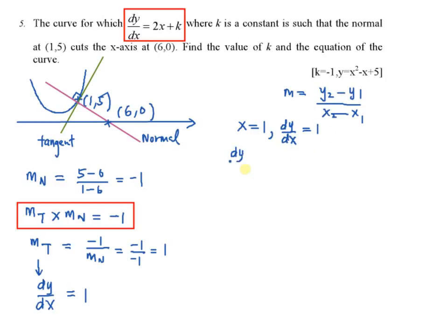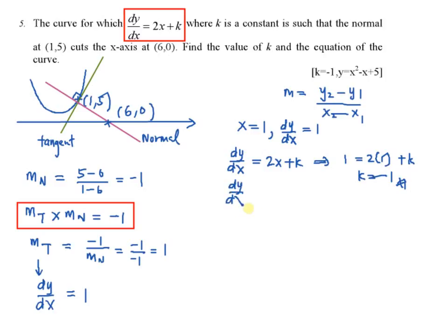If I know this, I can substitute inside to find the value of k. That is: 1 equals 2 times 1 plus k, where dy/dx equals 1 and x equals 1. Therefore, the value of k equals negative 1. Now, my dy/dx equals 2x minus 1.